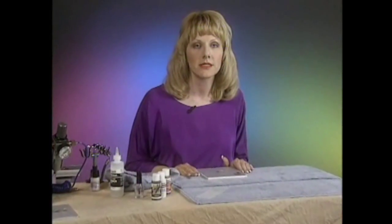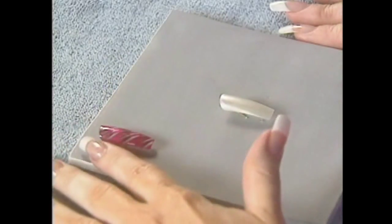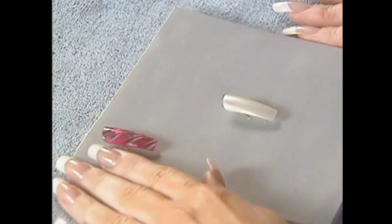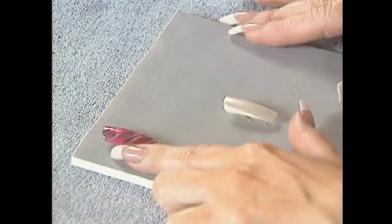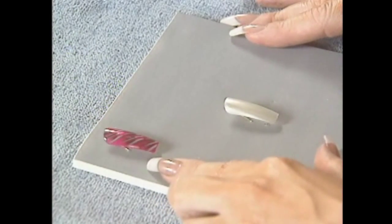Let's start by doing a simple stencil moving design. We're going to put a solid color down on the nail tip, and then I'm going to place the stencil and spray a color through, move it down, spray it again, and then we'll do it a third time.